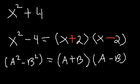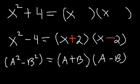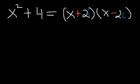Now if you have the sum of squares, you can factor it like this: it's going to be x and 2i. i is an imaginary number, one is going to be positive and the other is negative. You need to know that i is equal to the square root of negative 1, and i squared is negative 1.